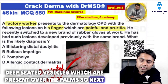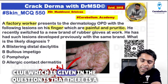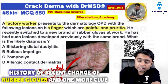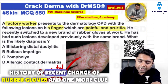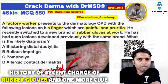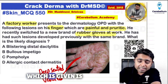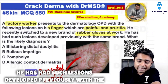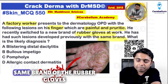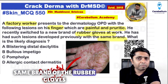The next clue given in the question is that there is a history of recent change of rubber gloves, and one more clue given is that he has had such lesions develop previously with the same brand of rubber gloves.